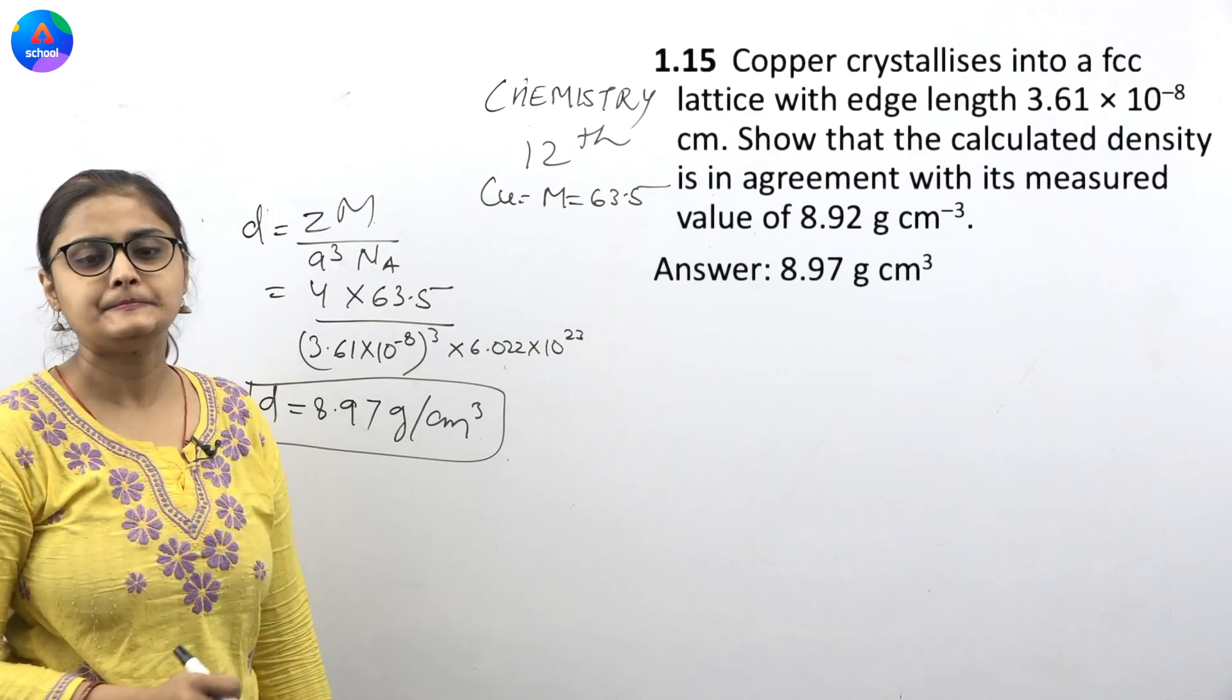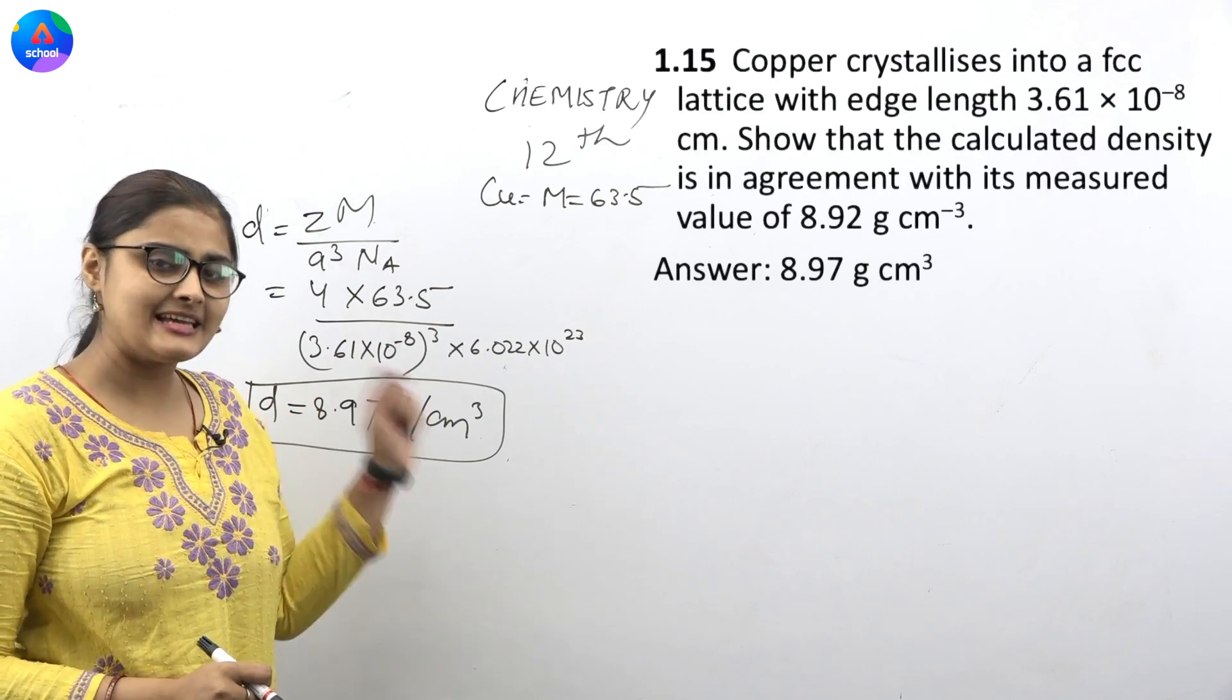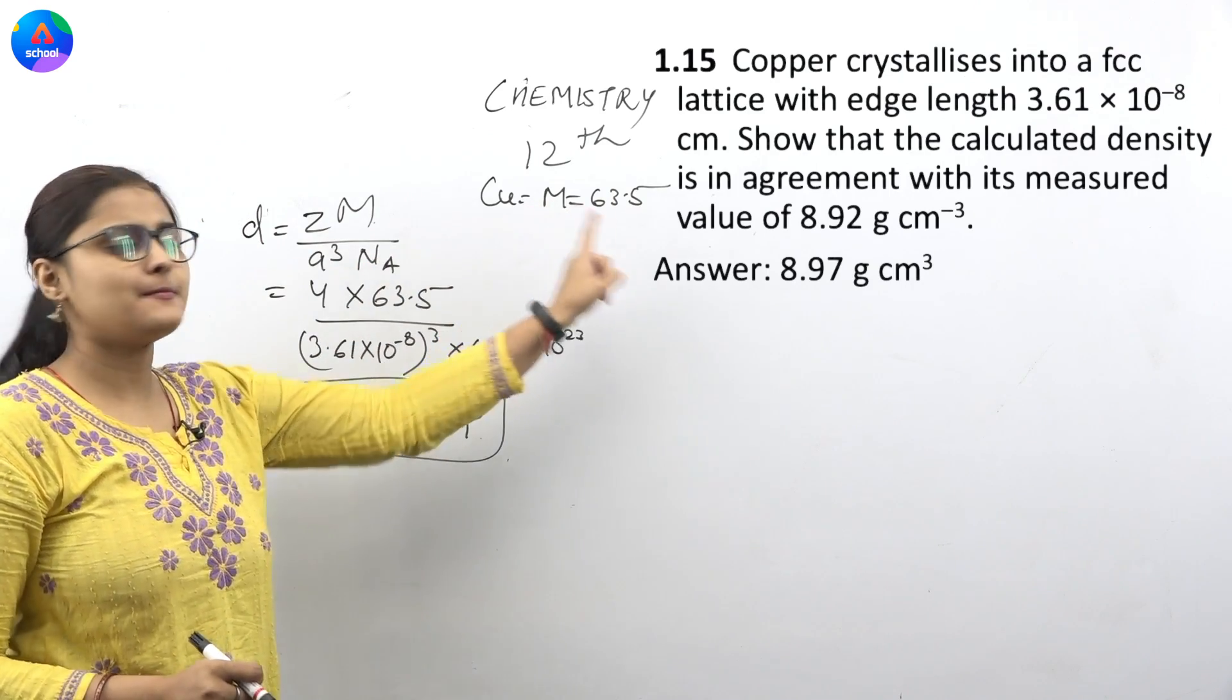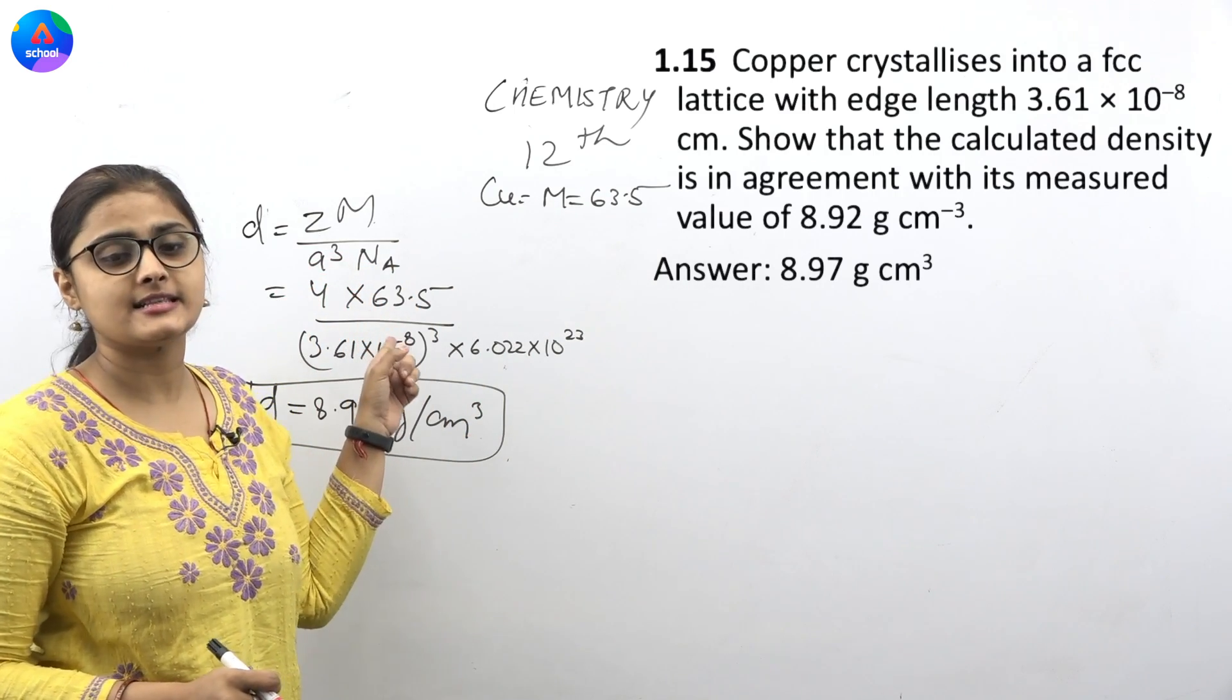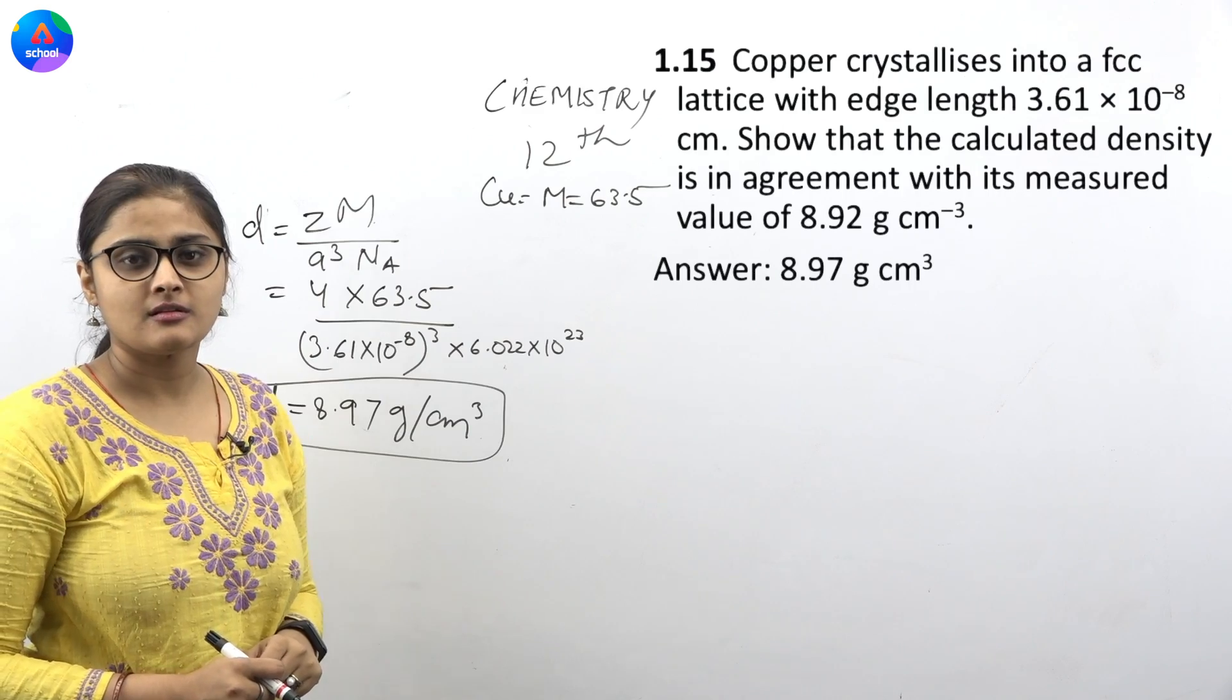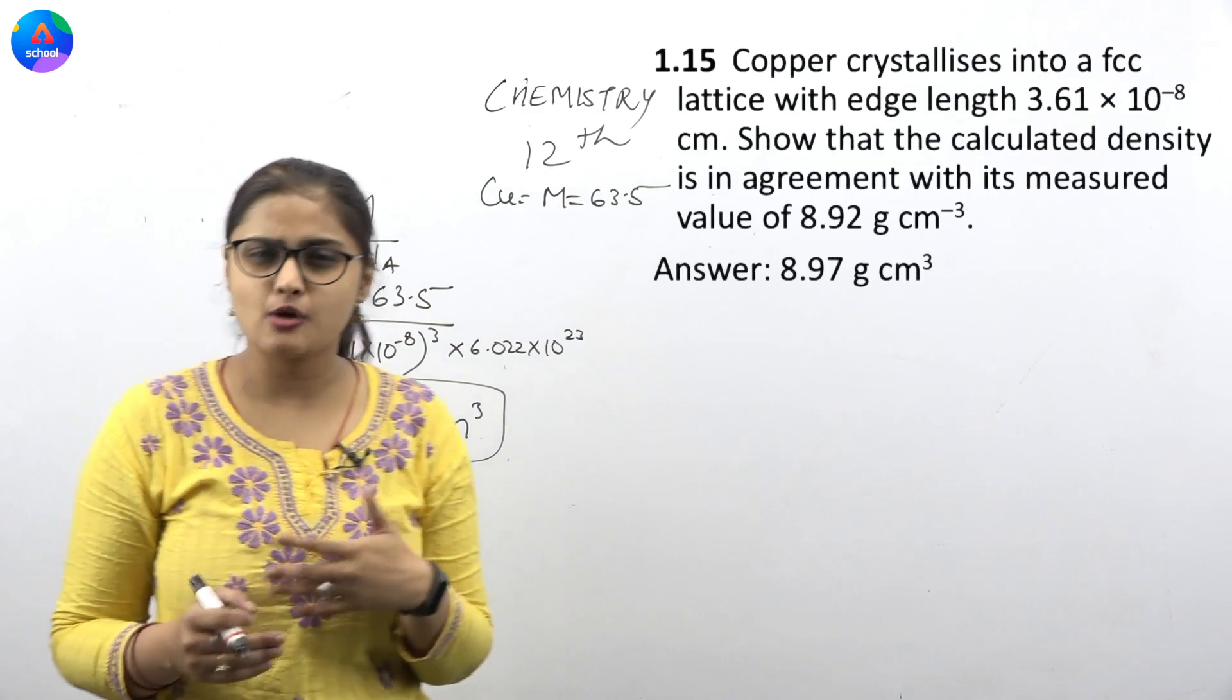So this is your answer. The method is the same, just the molecular mass. That's it. Because it is FCC, that's why Z is equal to 4. So this is how the problem is solved.